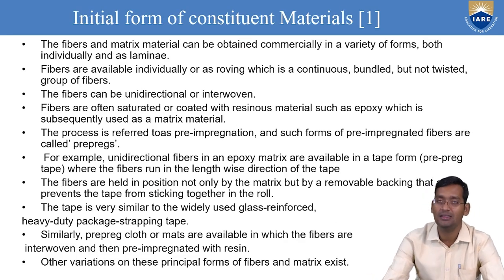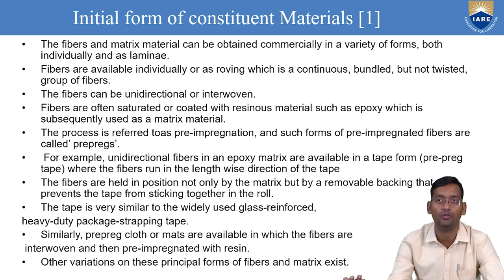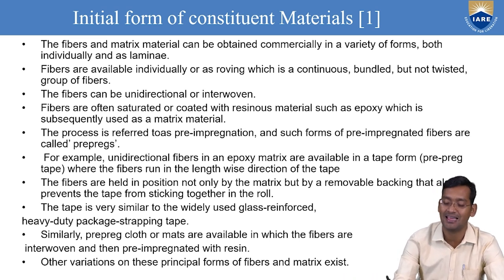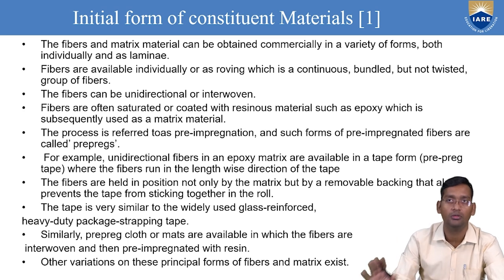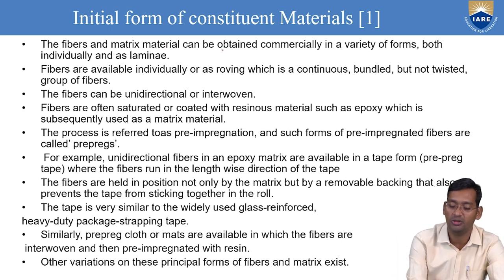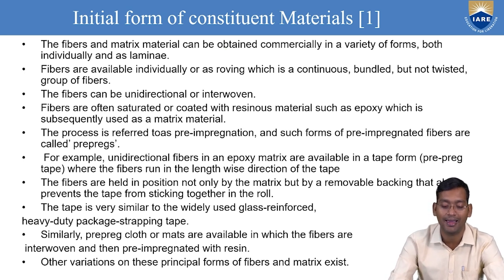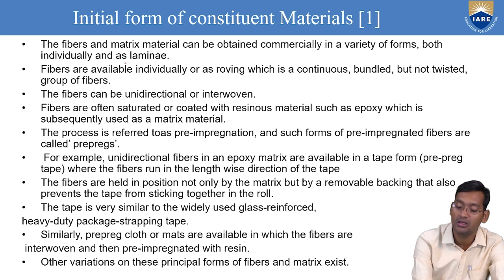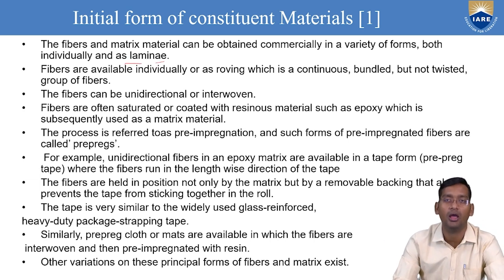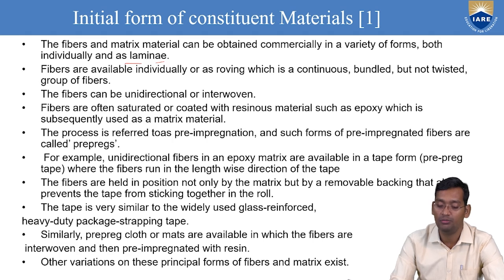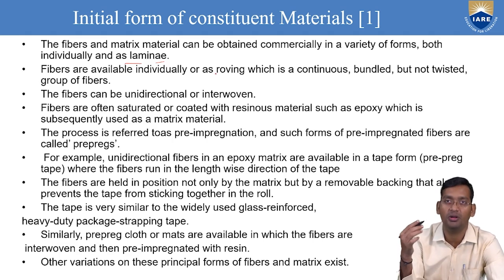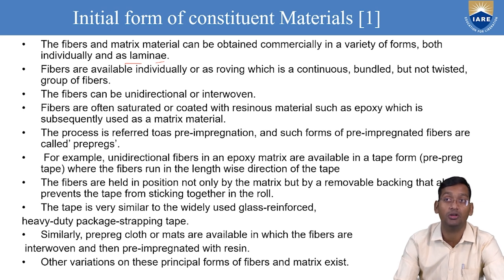Now we will see the manufacturing process. Before that, what are the things required for manufacturing — that is called the initial form of constituent materials, just like sand, iron, cement. The fiber and matrix material can be obtained commercially in a variety of forms, both individually and as laminate — that is called a lamina. Fibers are available individually or as roving, which is a continuous bundle that is not twisted — straight groups of fiber. The fiber can be unidirectional or interwoven.